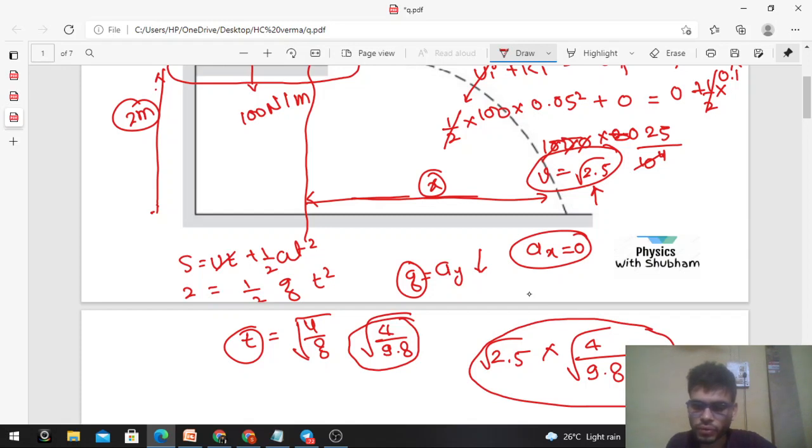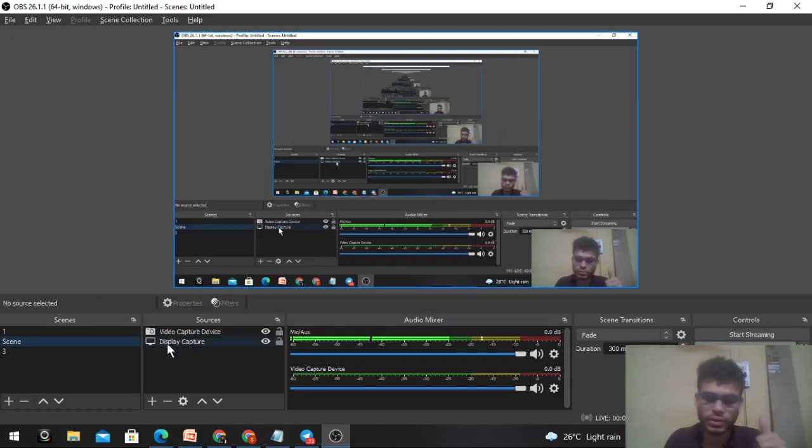This will approximately be 1 - you can check and calculate it. If you take the value of g as 10, I think it should be 1 meter. Let me know if you still have any confusion, we can discuss further. Okay guys, all the best, bye.